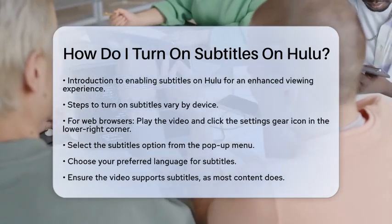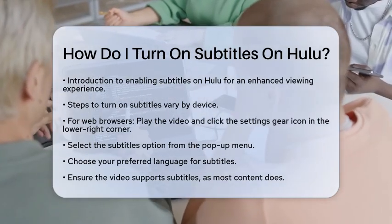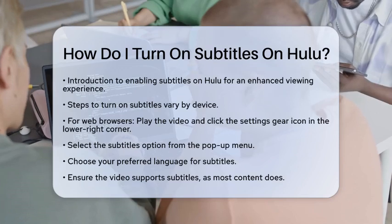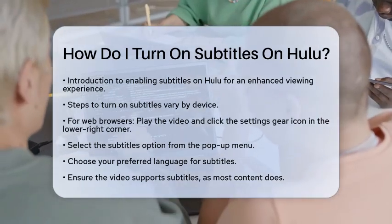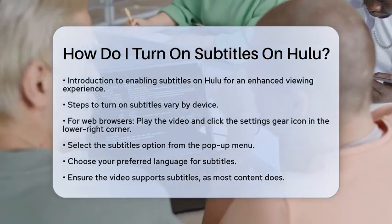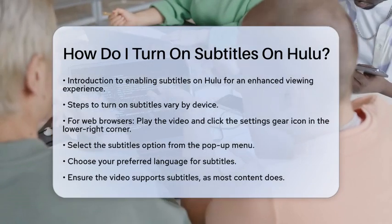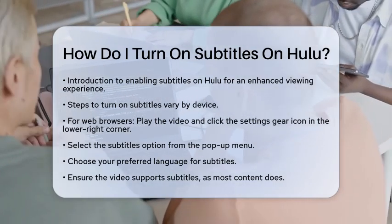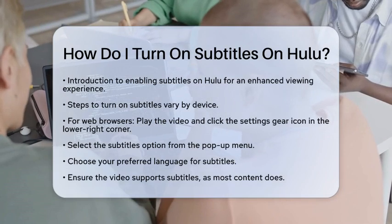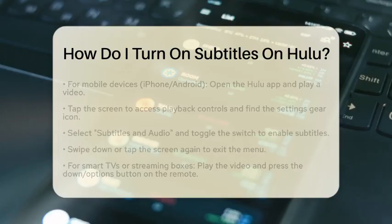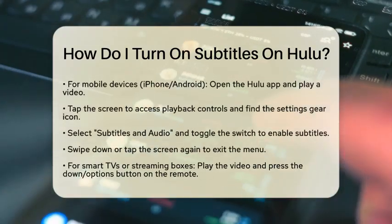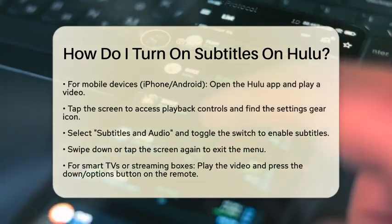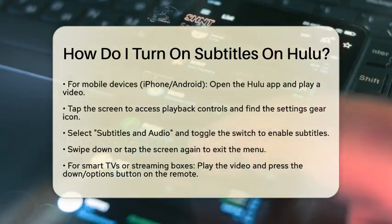If you are watching on a web browser, start by playing your chosen video. Look for the settings gear icon, which is usually found in the lower right corner of the video player. Click on that icon and you will see a menu pop up. From there, select the option for subtitles. You can then choose your preferred language and the subtitles will appear right away. Just make sure the video supports subtitles, as most content on Hulu does.